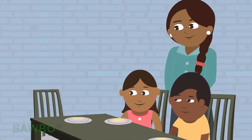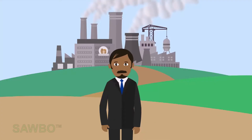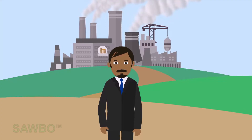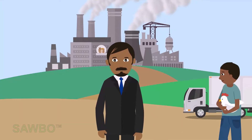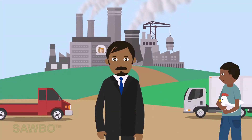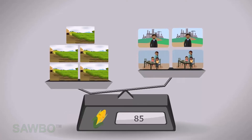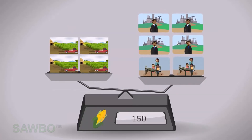Now we notice some changes on the demand side. A maize factory is built to produce animal feed. The animal feed factory buys a lot of maize and causes the maize price to go up to 150 units per bag.